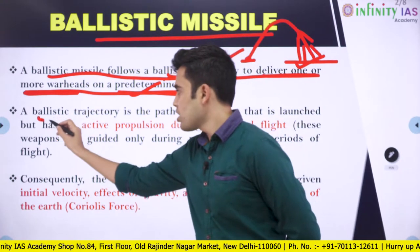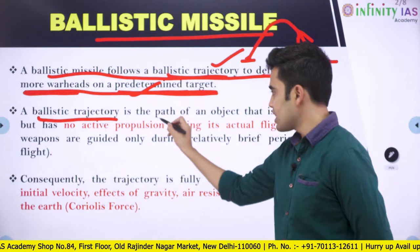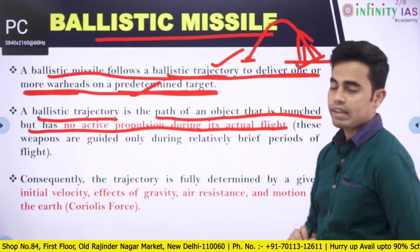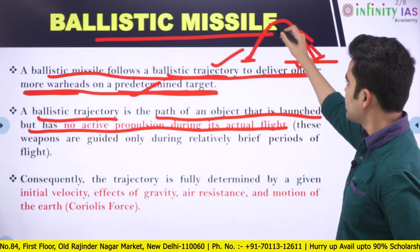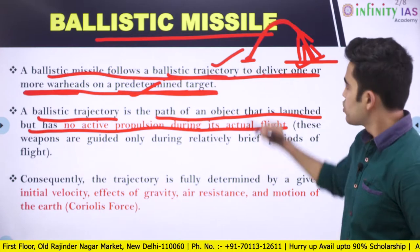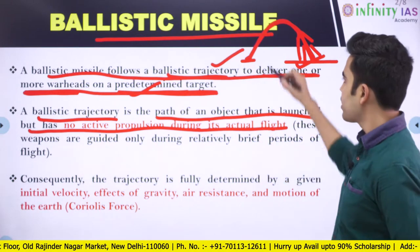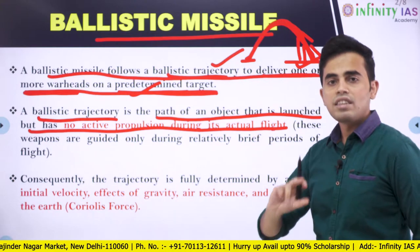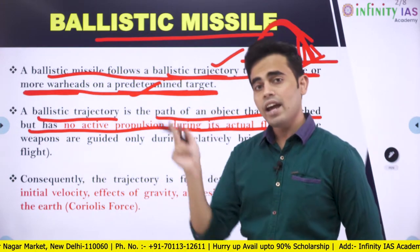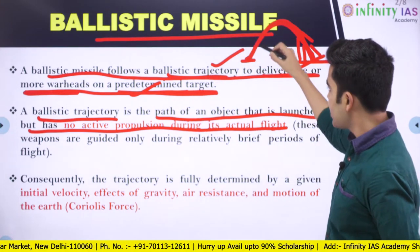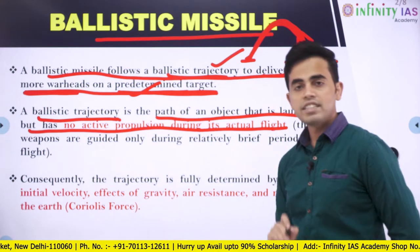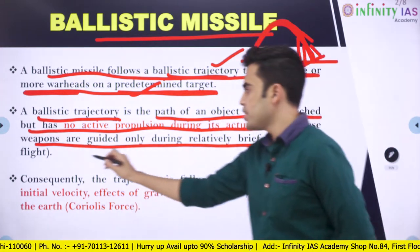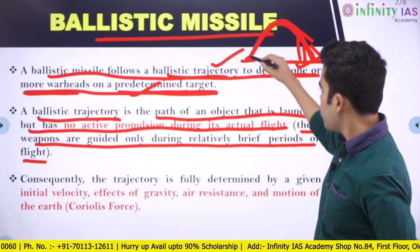A ballistic trajectory is the path of an object that is launched but has no active propulsion during its actual flight. When you throw an object into the air, it doesn't have any propulsion — for example, if you throw a ball, it will follow that arc. A ballistic missile is similar: it follows a ballistic trajectory and these weapons are guided only during relatively brief periods of flight, that means only in the initial phase.